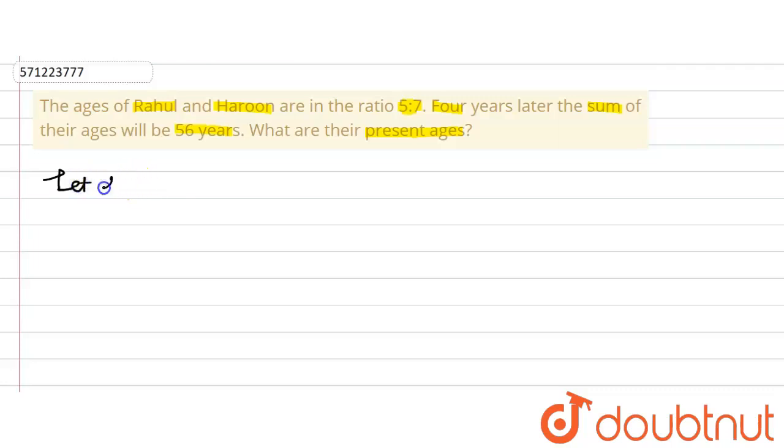Let us assume Rahul's age to be 5x years and Harun's age to be 7x years.